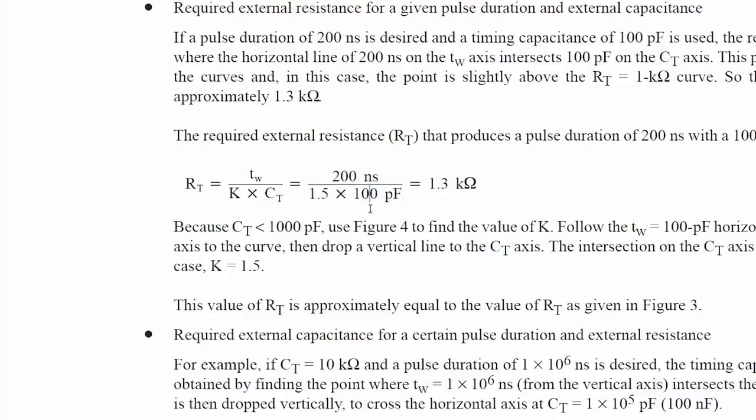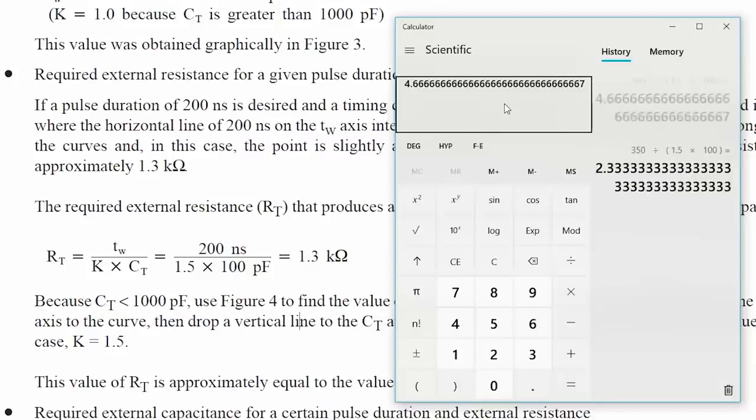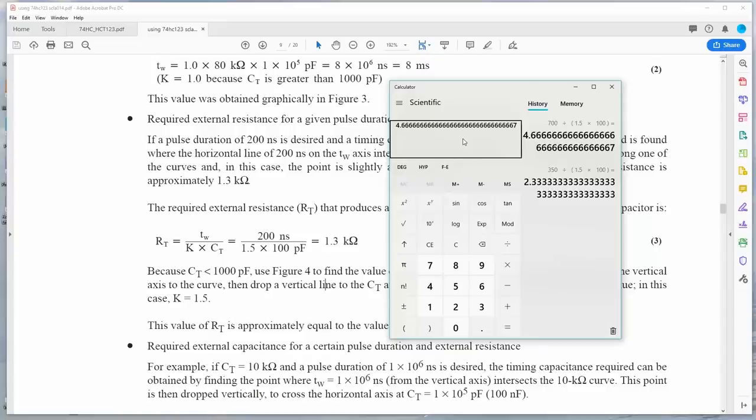I have some 100 picofarad capacitors, so we'll use that as a constant. And the two variables will be the time required and the resulting resistor needed. 350 divided by 1.5 constant times 100 picofarads, 2.33. Alright, jot that down. Then the other one would be 700 nanoseconds divided by 1.5 times 100, 4.6. Alright. So we need 2.3 and 4.6 k ohm resistors. I think what I'll just do is use a couple of 10k pots. That way we can dial it in because this formula might not be exactly right in the real world anyway.